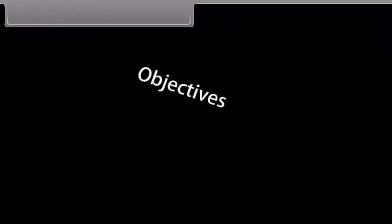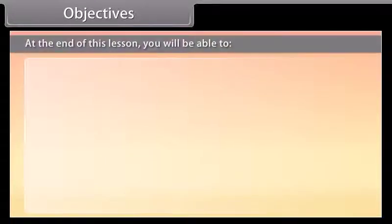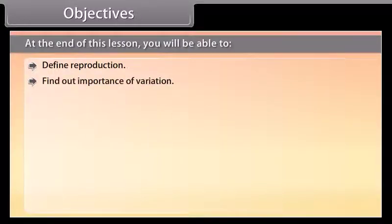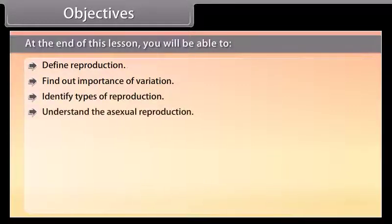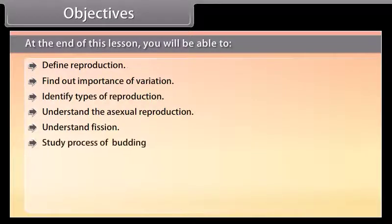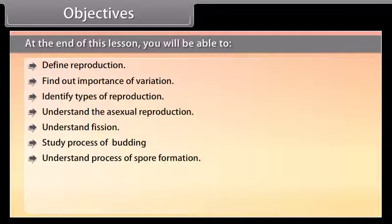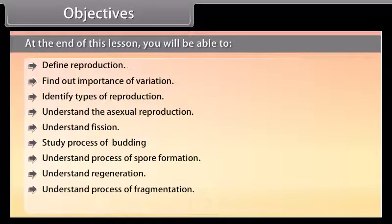Objectives: At the end of this lesson, you'll be able to define reproduction, find out the importance of variation, identify types of reproduction, understand asexual reproduction and fission, study the process of budding, understand spore formation, regeneration, fragmentation, and vegetative reproduction.